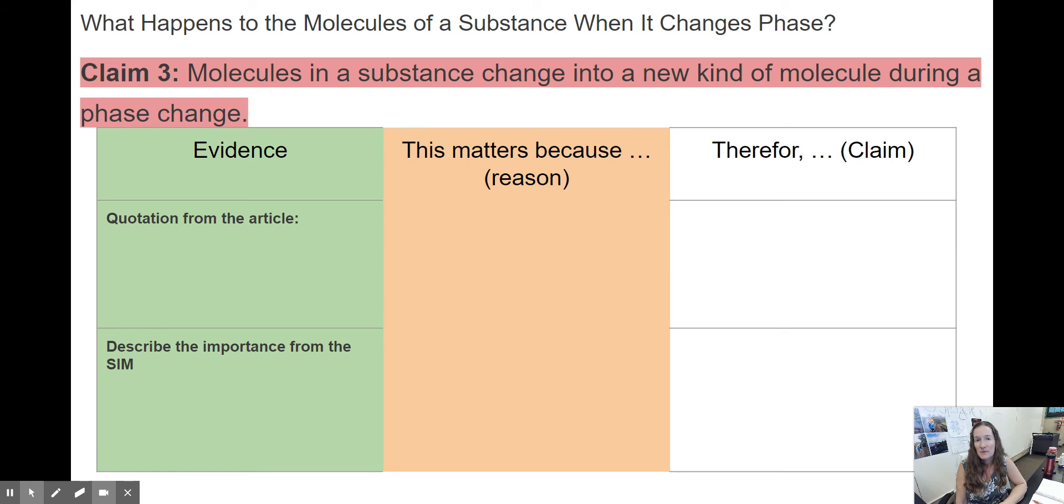Now we're going to claim 3. In claim 3 we know is not correct, but we still want evidence to prove that it's not correct. We don't just say claim 2 is proven, so we don't even need to deal with claim 3. That's not how science works. So claim 3: molecules in a substance change into a new kind of molecule during phase change. I'm going to use the exact same quote from the article. The appearance of water is determined by the way the water molecules are moving. This evidence helps refute claim 3.